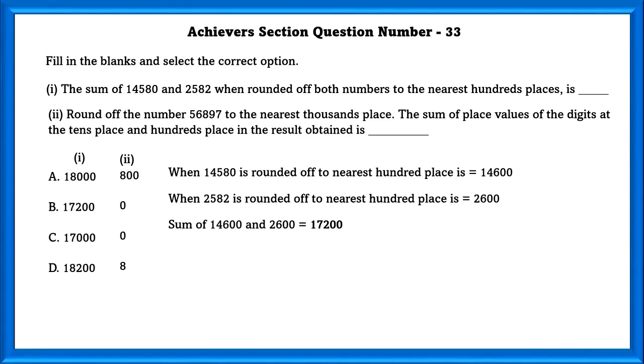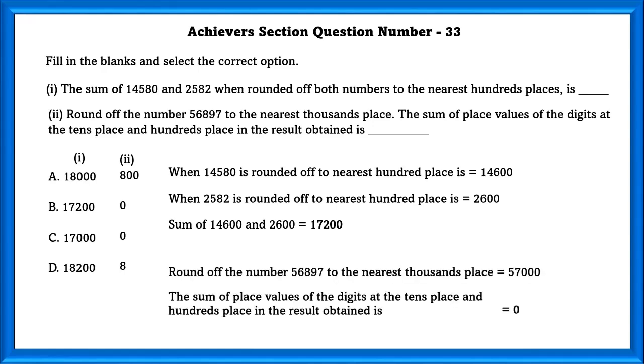Second, round off the number to the nearest thousandth place. The sum of the place values of digits at the tenths place and hundredths place in the result obtained is. Rounding off the number, we will get 57,000.